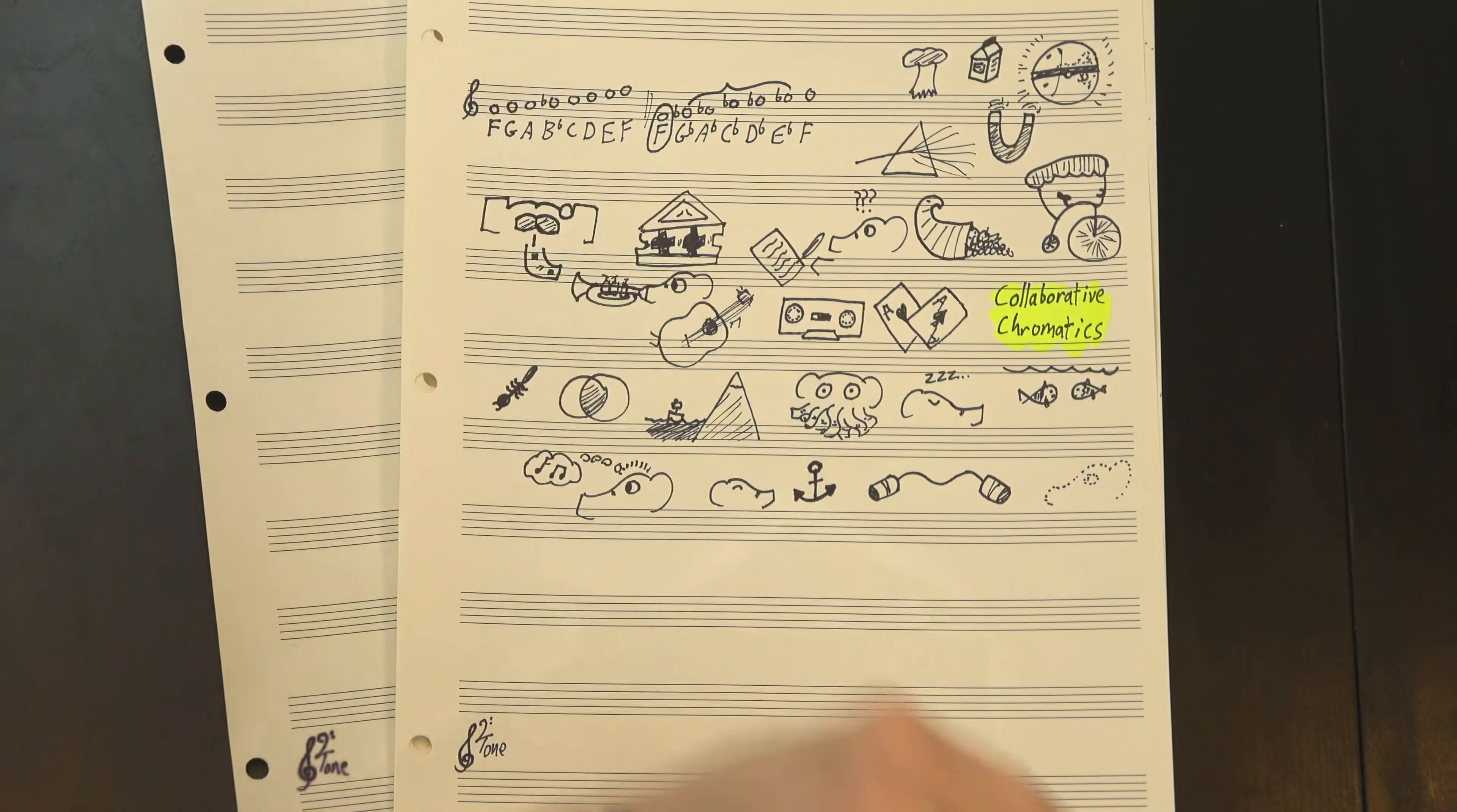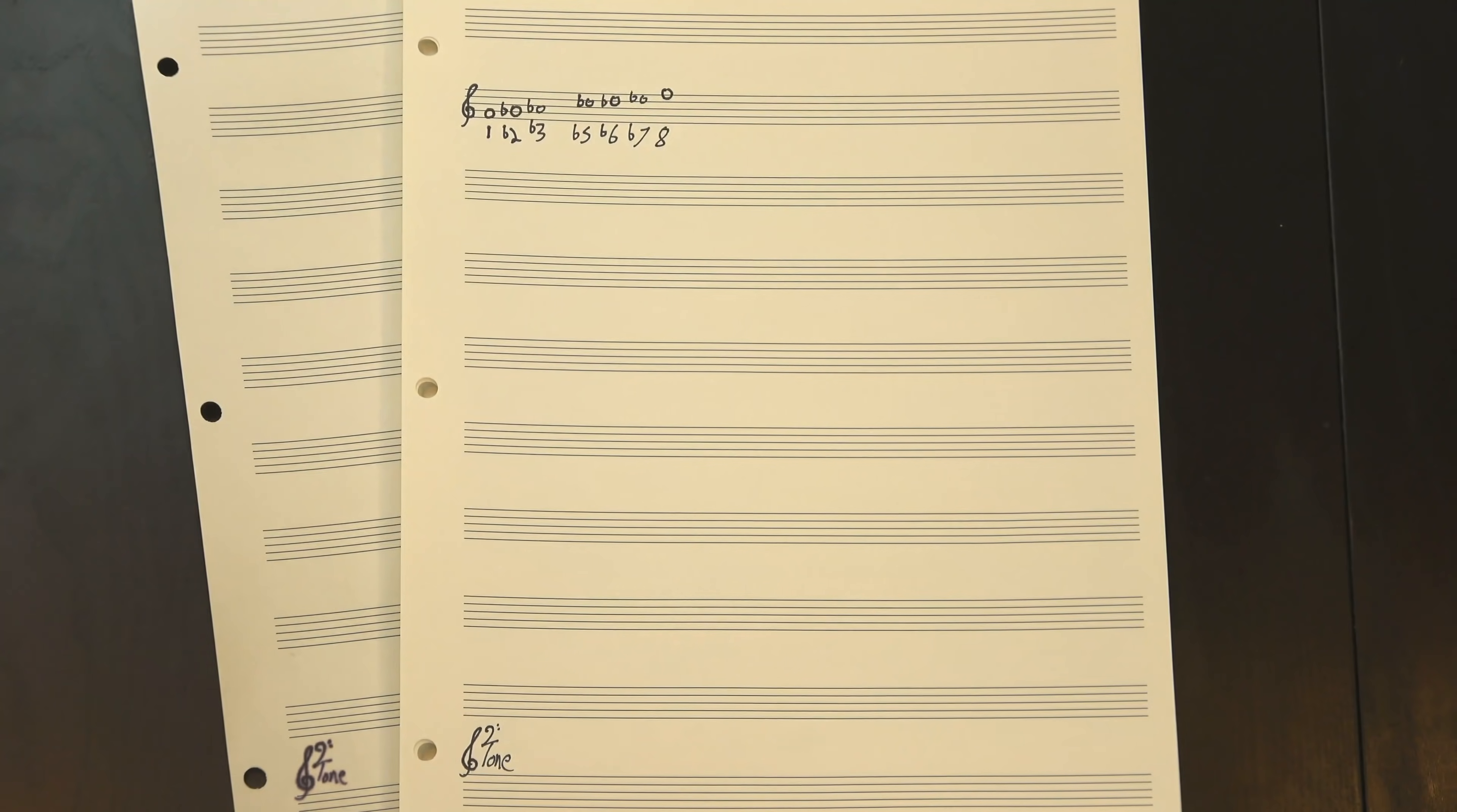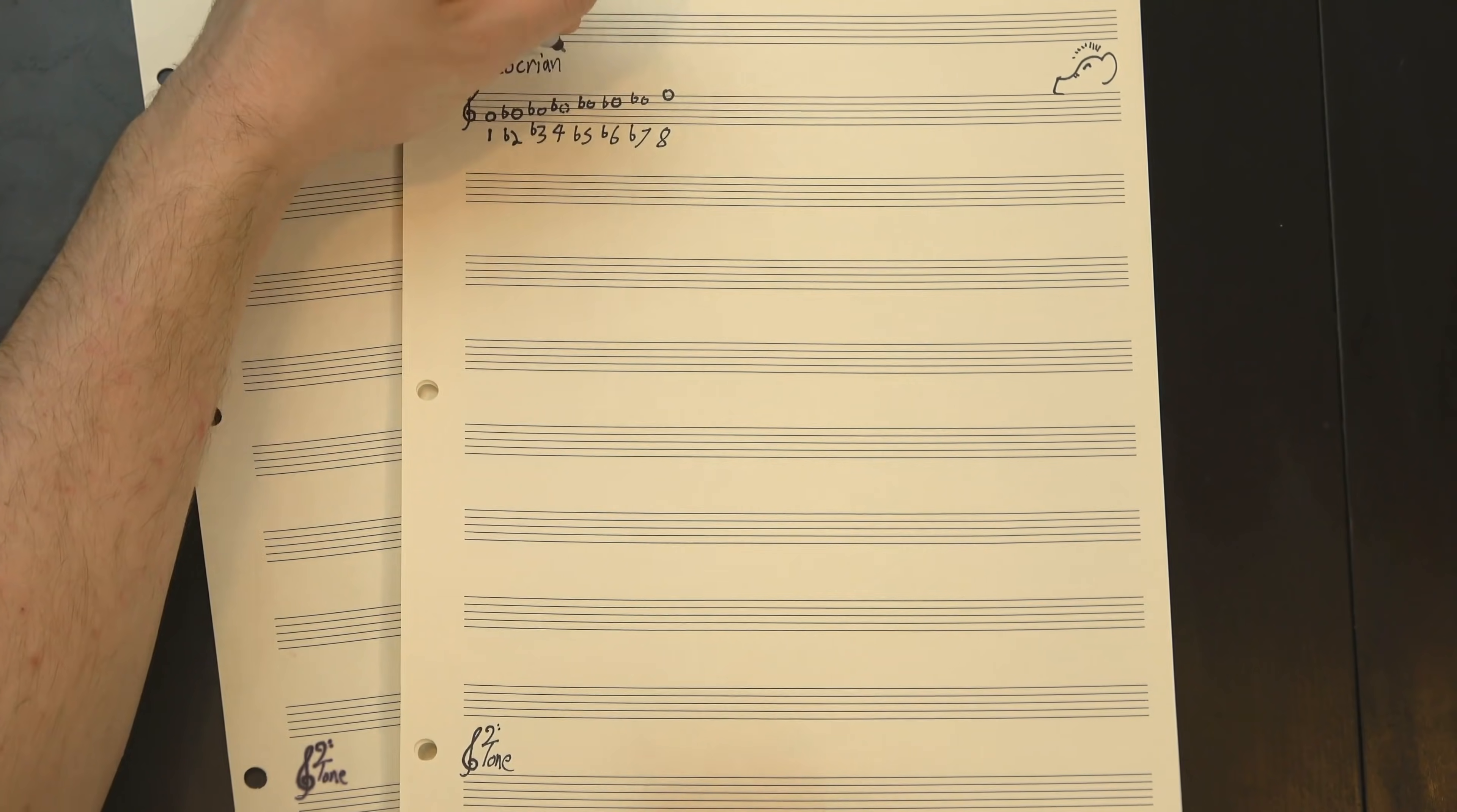So what really got me excited here was looking at what this process could tell us about the structure of these scales. There's a lot of angles to approach this from, but one thing immediately stood out to me. Here, let's look at anti-major again. Now, I don't know about you, but to me, this looks really familiar. If I just sneak an extra note in the middle here, we get this, which is a scale called locrian.